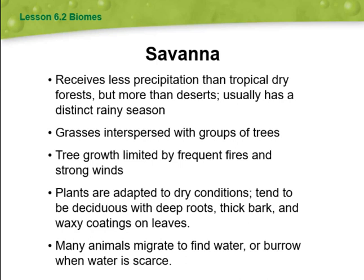The savanna receives less precipitation than tropical dry forests but more than deserts. It usually has distinct rainy seasons, with grasses and groups of trees. Tree growth is limited by frequent fires and strong winds, and plants are adapted to dry conditions. We are going to talk about those biomes and many more during the week.